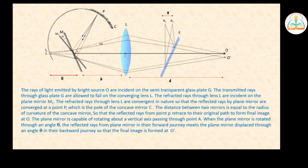The reflected rays from point P retrace the original path to form the final image at O. When the mirror is not rotated, the final image is formed at O. The plane mirror is capable of rotating about a vertical axis passing through point A. When the plane mirror is rotated through an angle theta, the reflected rays in their forward journey meet the plane mirror displaced through angle theta, so that the final image is formed at the point O-prime.